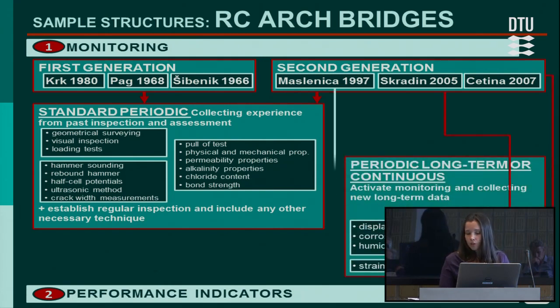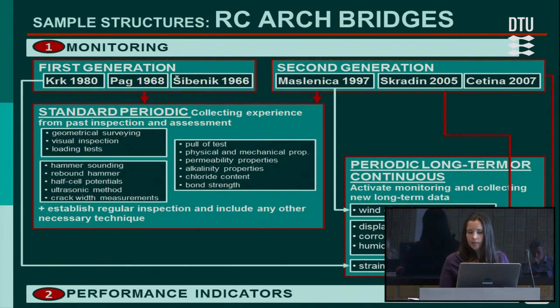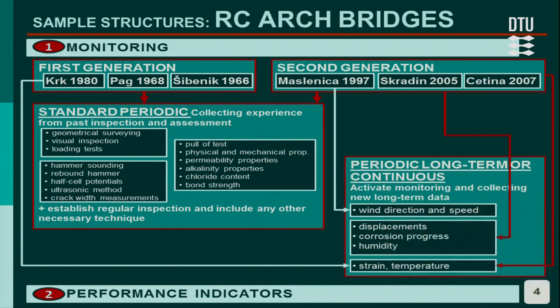Bridges of the second generation are equipped with sensors. For all three of them we can measure displacements, corrosion progress, humidity, strain, and temperature. Additionally, for Maslanica Bridge we can measure wind direction and speed. At the old Kirk bridge, at the two piers of a smaller arch, fiber optical sensors were installed during the repair to measure strain and temperature.